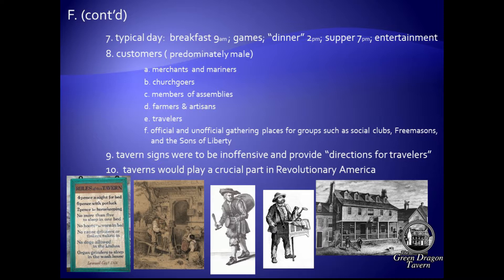Tavern signs were regulated by the colonial assembly. They were to be inoffensive and, according to a quote, provide directions for travelers — though in all the research and taverns visited, it was hard to tell that any signs actually gave advice to travelers. Taverns played a crucial role in the revolutionary era. Many meetings by the Sons of Liberty and colonials dissatisfied with British policies were held in taverns, where they made plans and talked about principles. So taverns played a very large role in the revolutionary era.